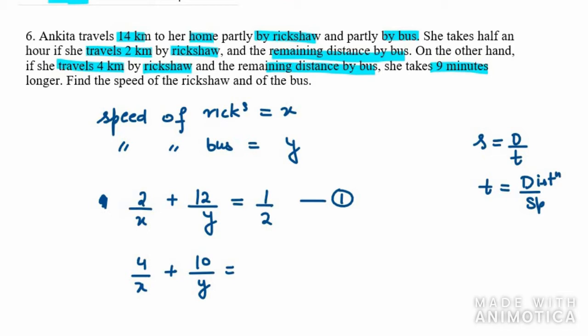It means after 30 minutes, 9 minutes is going to be added. So it will be half plus 9 over 60. We need to take LCM of this, so it is 60. I need to multiply the first term with 30, so it will be 30 plus 9 over 60, which is 39 over 60. The equation is 4/x plus 10/y equals 39 over 60. This is my equation number 2.